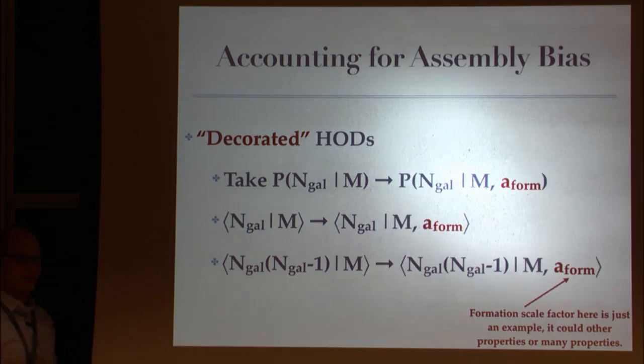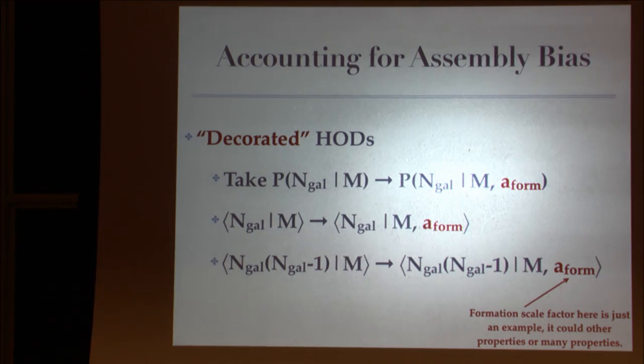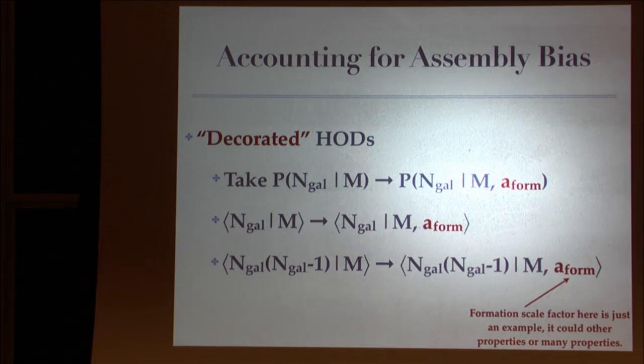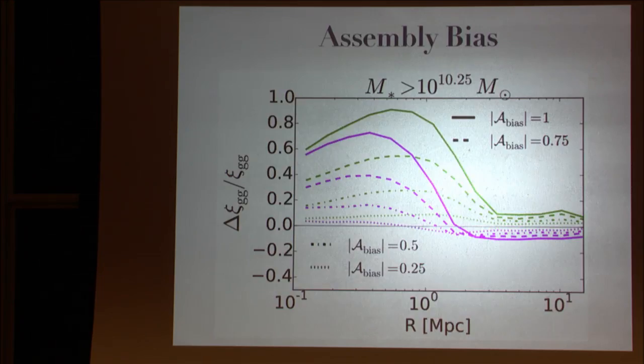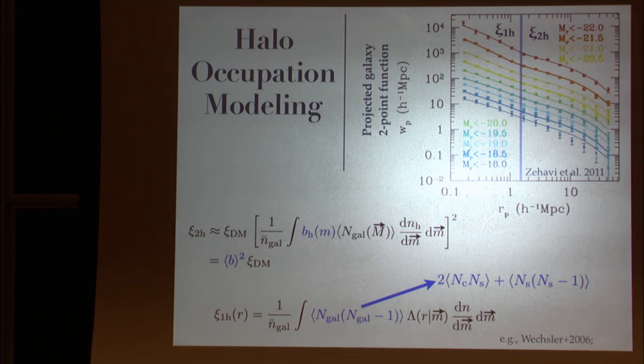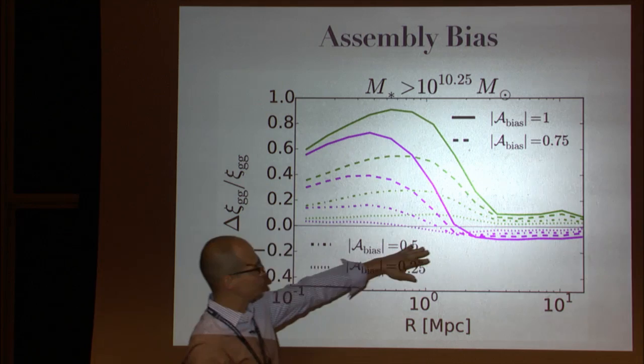All of the fits that I get are acceptable fits, right? I can fit data that has assembly bias with a model that doesn't have assembly bias. I just infer the wrong thing. That's the point. And so now what we want to do is, and this might be getting a little broke, but I think it's an interesting exercise to see how far you can get, is to just generalize in a really straightforward manner the halo occupation, or it could be conditional luminosity function. I have no preference to one over the other. Formalism, where you just add other parameters, other properties of the halos that you're looking at. Formation time, concentration, whatever it is.